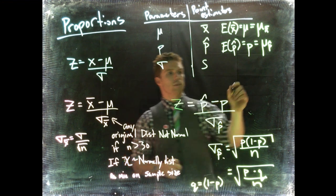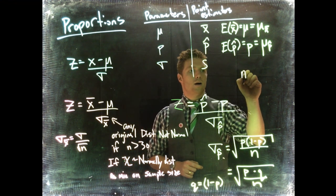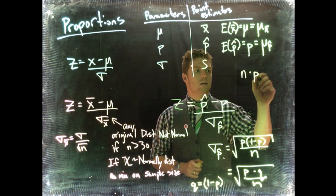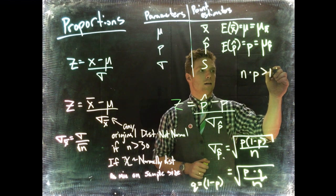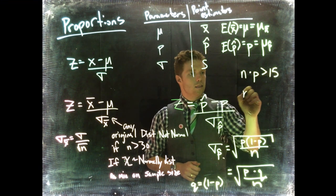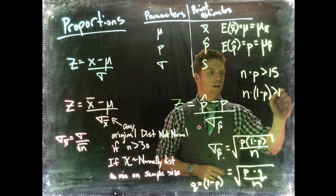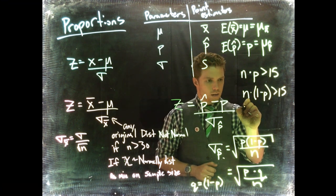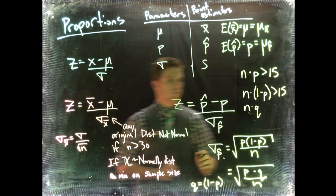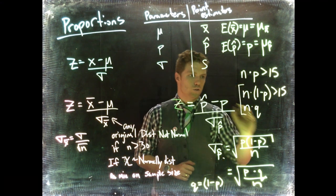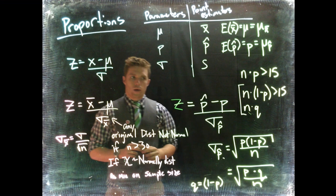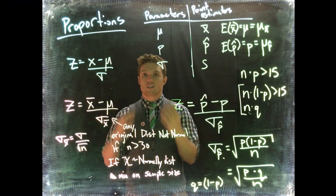We determine this by requiring n times P to be greater than 15, and n times 1 minus P—also written as n times Q—to also be greater than 15. Those two are the same.